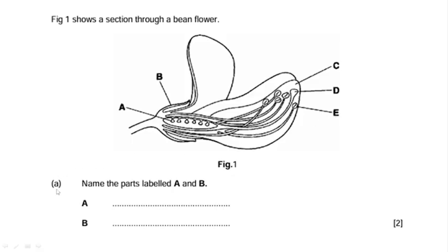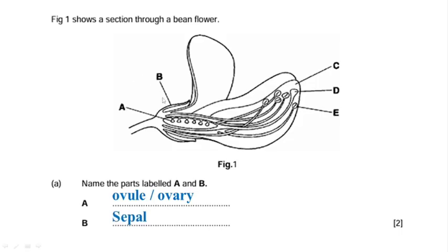We are going to start with question A: name the parts labeled A and B. The name of the part labeled A is the ovary. The part labeled B is the sepal. So I have answered question A.